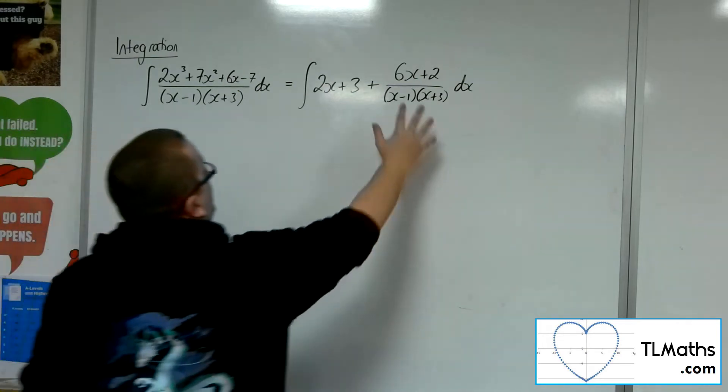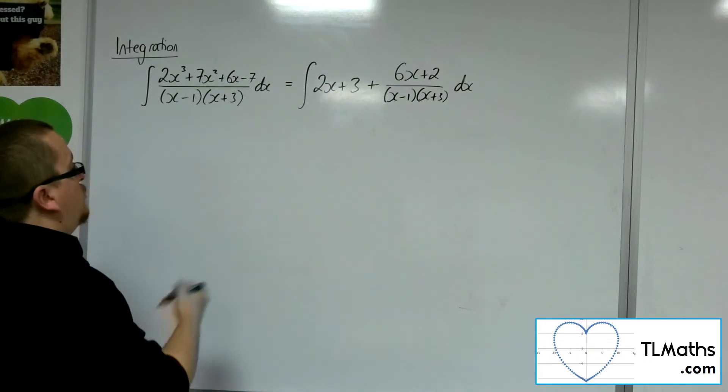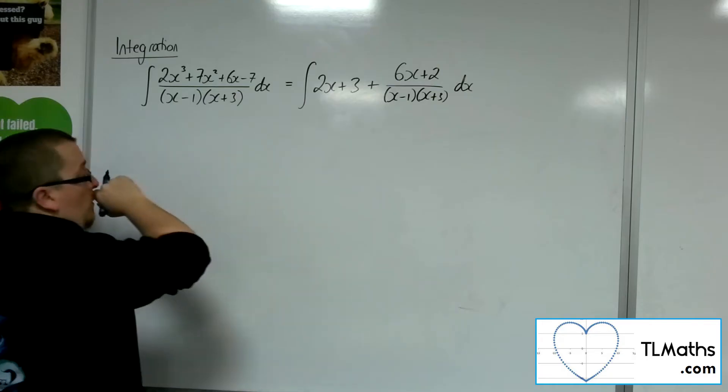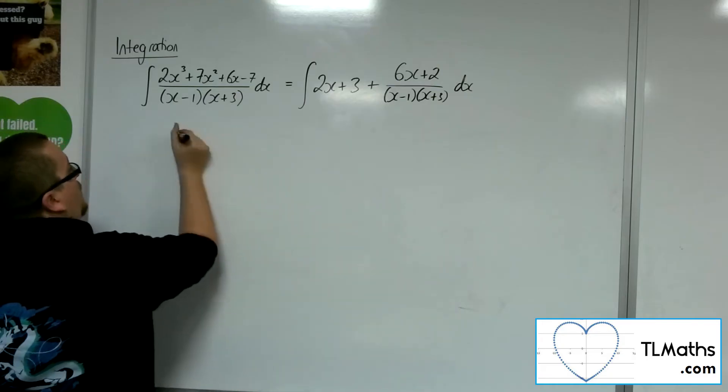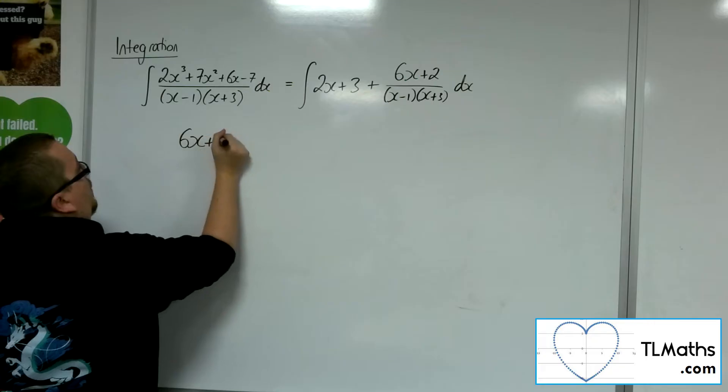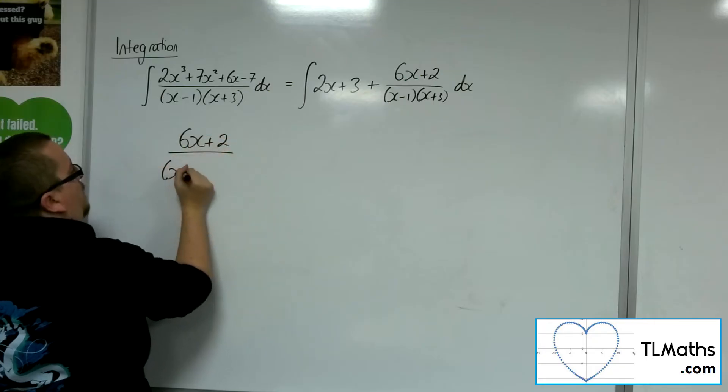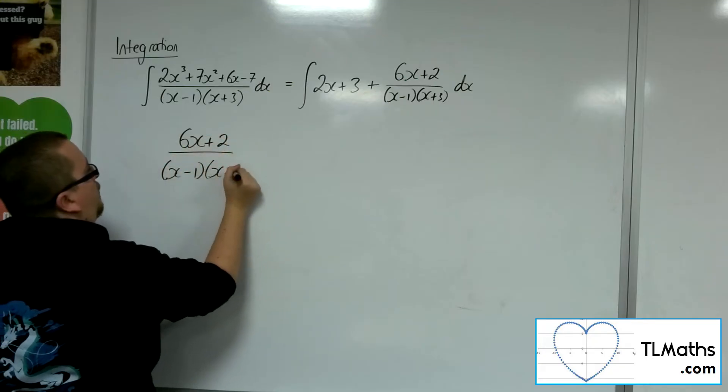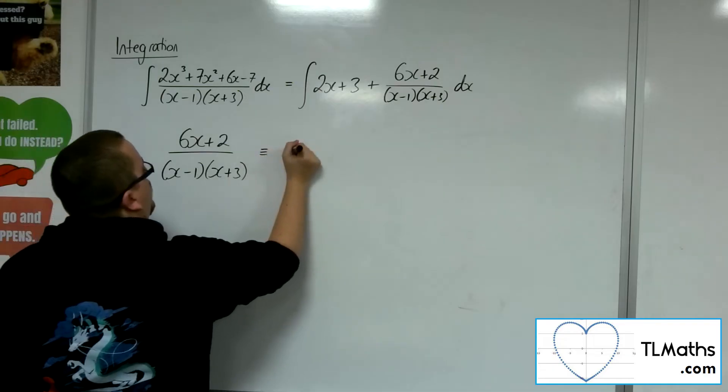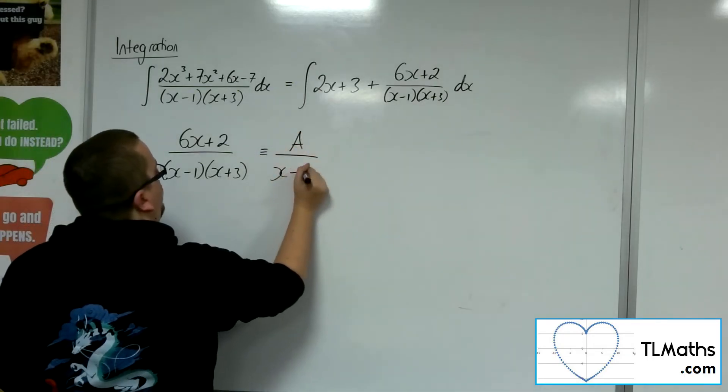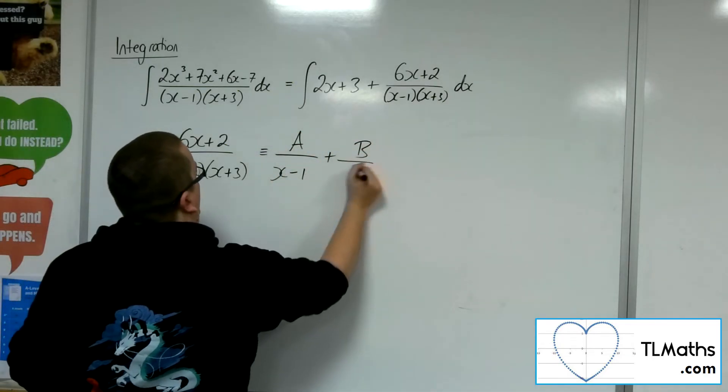Now, with the 6x plus 2 over x minus 1, x plus 3, I've got to use partial fractions for that. So we've got 6x plus 2 over x minus 1, x plus 3. That'll be equivalent to A over x minus 1 plus B over x plus 3.